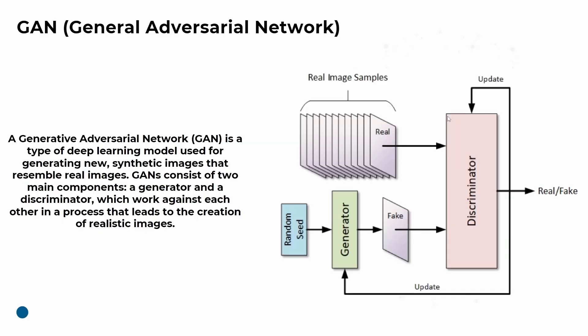The first way is GAN - a Generative Adversarial Network. It's a deep learning model used for generating new synthetic images that resemble real images. GANs have two main components: a generator and a discriminator.